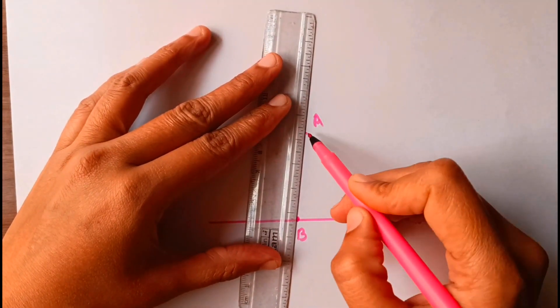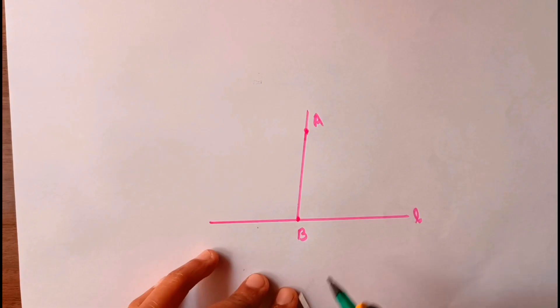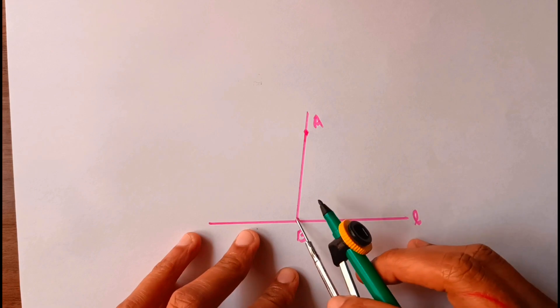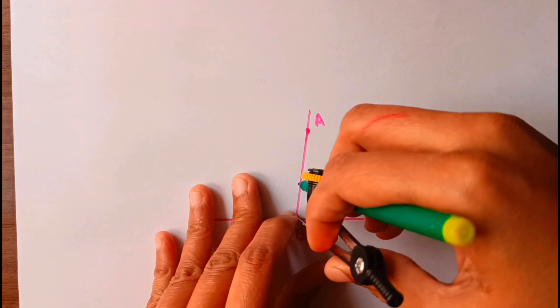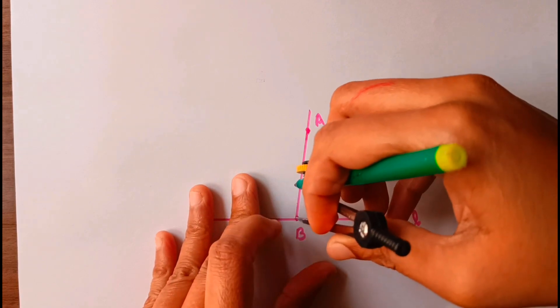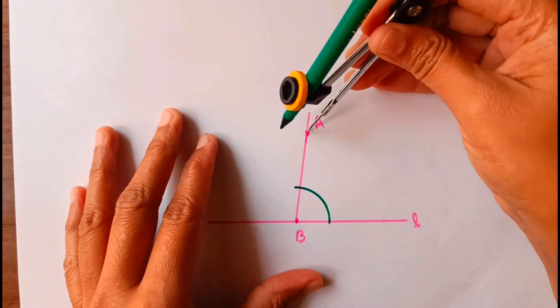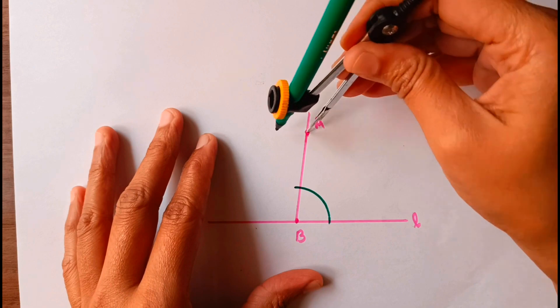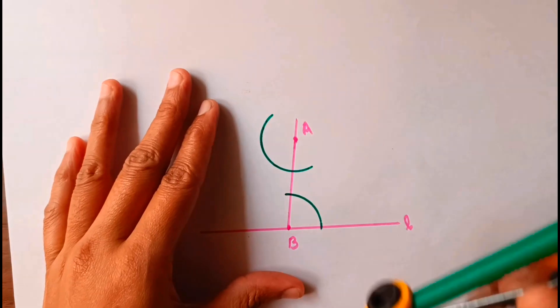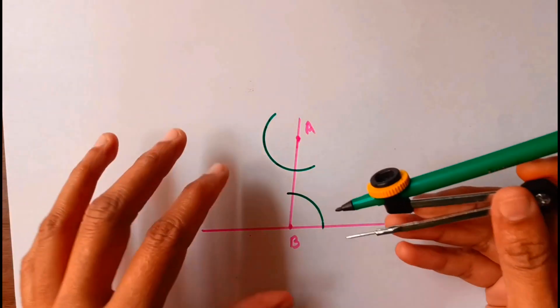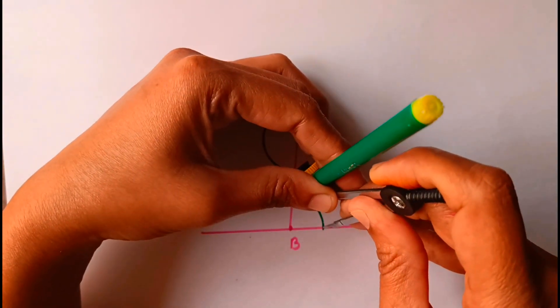With the same radius on point A, make an arc cutting AB. Now take the distance from this point to this point.